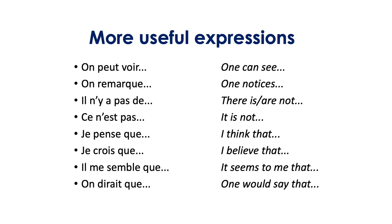To review, we've gone through our three steps: one — a general overview of the image; two — a detailed physical description of the image; and three — personal opinions and/or interpretations. Here are some additional expressions you may have noticed in the model description: On peut voir — One can see. On remarque — One notices. Il n'y a pas de... — There is/are not... Ce n'est pas — It is not. Je pense que — I think that. Je crois que — I believe that. Il me semble que — It seems to me that. On dirait que — One would say that.